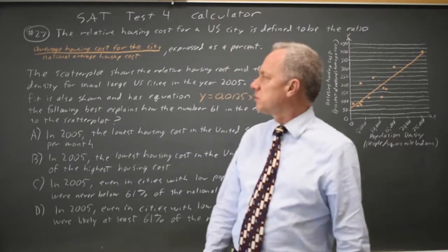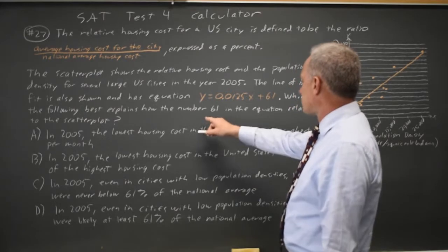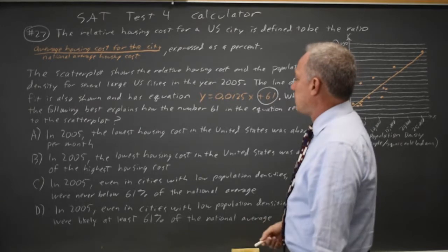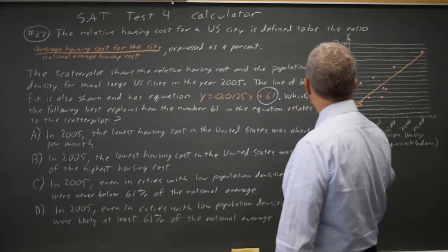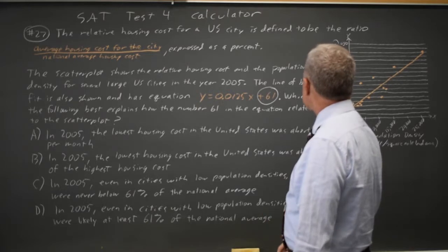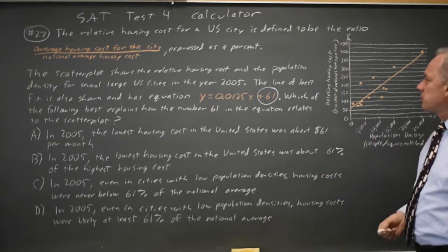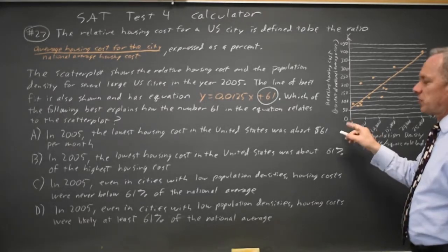And that turns out to be important. Their question is: which of the following best describes the number 61 in the equation of the line of best fit? The number 61 is the y-intercept. So that's the estimated relative housing cost as a percent of the national average housing cost for very low population densities.